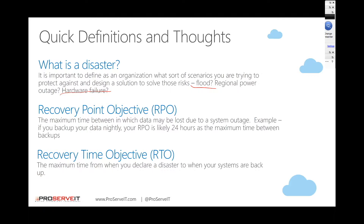Recovery Time Objective is the maximum time from when you declare a disaster to when your systems are back up and running. Think about it this way: you notice your environment is down and you declare a disaster, meaning you need to re-enact your disaster recovery process and follow your runbooks. It's the time from when you declare the disaster until the time you're back up — that is the Recovery Time Objective.